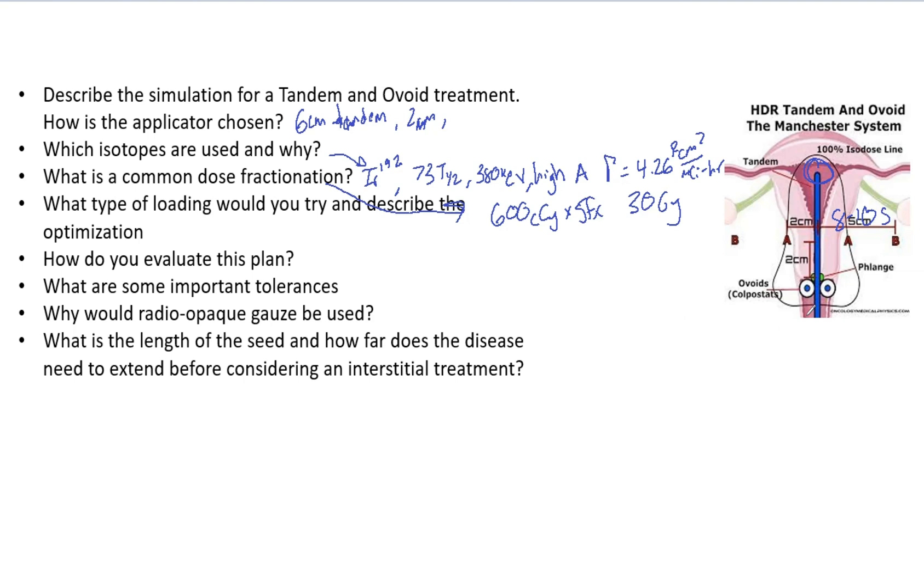How would you evaluate this plan? If you're doing a second check, you want to look at the coverage of the PTV. You also want to look at the regions of interest - the bladder, the bowel, all of the other surrounding organs, the rectum. You want to use an equivalent dose sheet because typically these T&O treatments, they are going to get external beam either as a boost or they've had external beam and they're getting a tandem and ovoid boost.